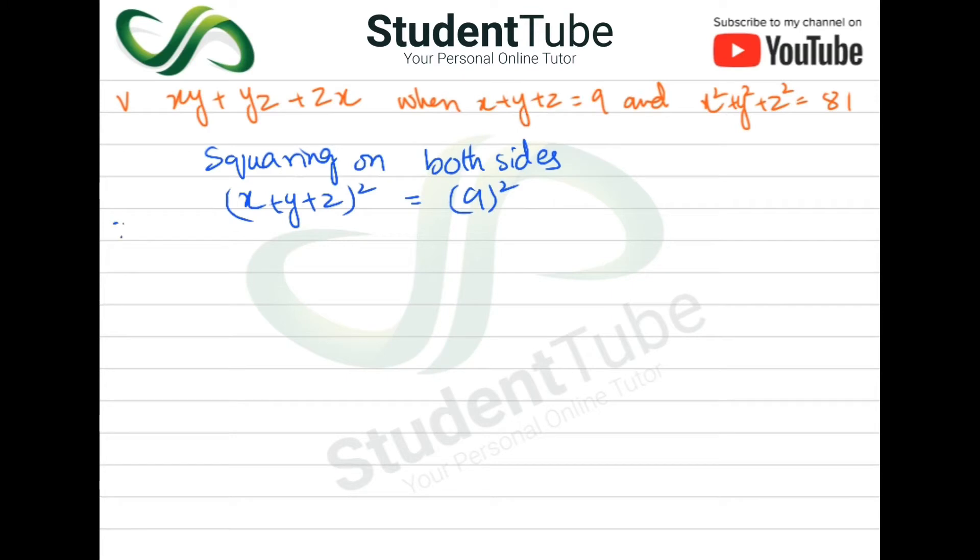So here is formula apply: (a + b + c)² = a² + b² + c² + 2ab + 2bc + 2ca.